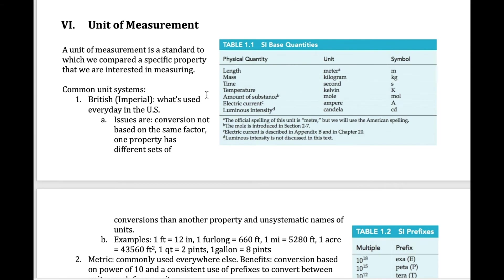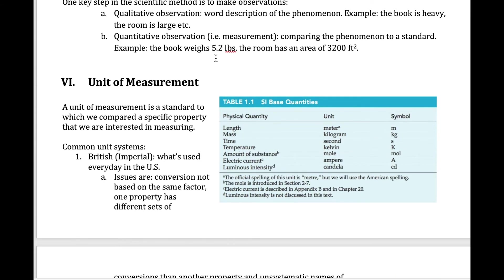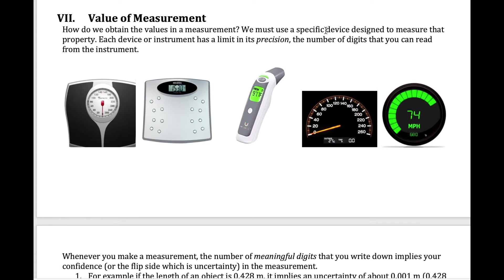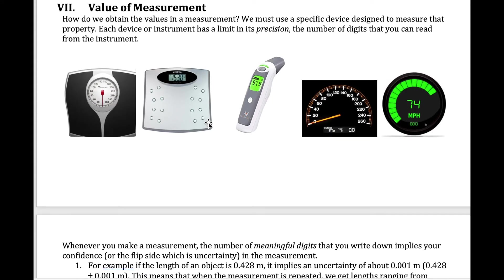Now that we've talked about units, let's talk about the value in a measurement — where does the number come from? Values come from an instrument specifically designed to measure a property, whether that's length, mass, weight, or volume. Instruments cannot read an unlimited number of digits, which is what we refer to as the precision of the instrument. For example, one speedometer shows 74 miles per hour while a more precise one shows 74.5 miles per hour — more digits means more precision.